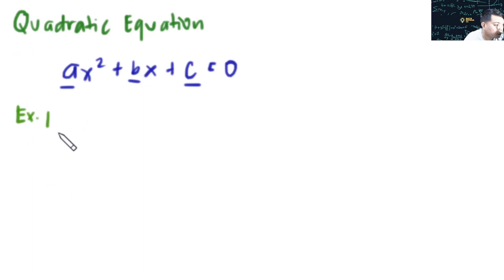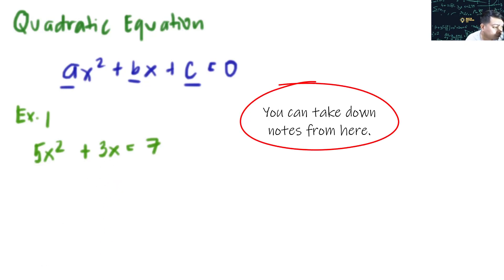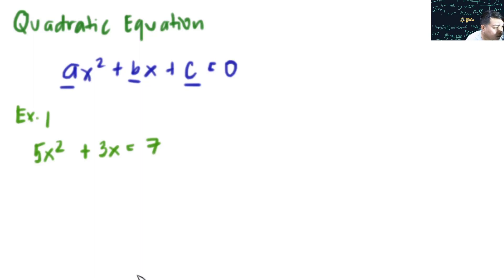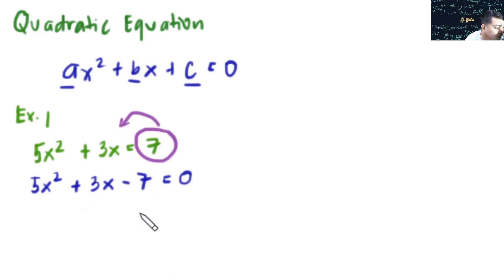Let's have some examples. Example number 1: we have 5x² + 3x = 7. This is not written in the standard form, so the first thing we need to do is convert it. We simply transpose the constant term to the other side of the equation. So that becomes 5x² + 3x − 7 = 0. This is now in standard form.